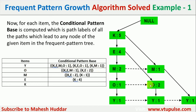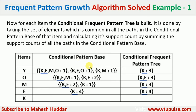For O, there are two paths: K, E, M (frequency 1) and K, E (frequency 2). For M, there are two paths: K, E (frequency 2) and K (frequency 1). For E, there is only one path — K — with frequency 4. For K, there is no node before it (only null), so there is no conditional pattern base. Once all conditional pattern bases are found, we proceed to build the conditional frequent pattern trees.